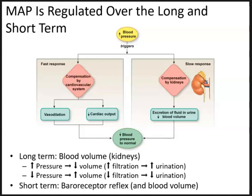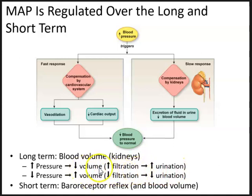Changes in blood volume affect mean arterial pressure. Long-term regulation of mean arterial pressure is through control of blood volume by the kidneys. To compensate for an increased blood pressure, the kidneys will excrete fluid in urine to decrease blood volume and cause a decrease in blood pressure. In the face of increased blood pressure, kidneys will compensate with increased urination and increased filtration, therefore causing a decrease in blood volume.